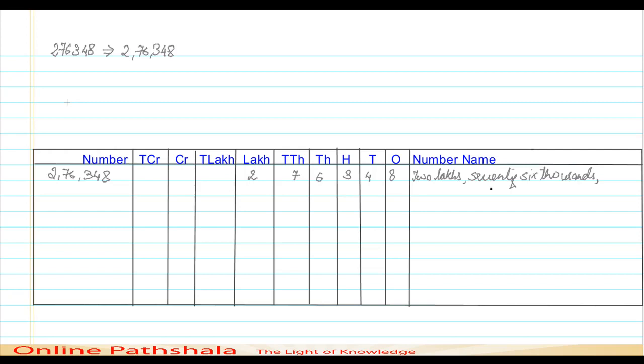Then 76,000 and 348. So this gives you like a place value is more of an aid to how to represent a number or how to recognize a number. Let us take one more example.